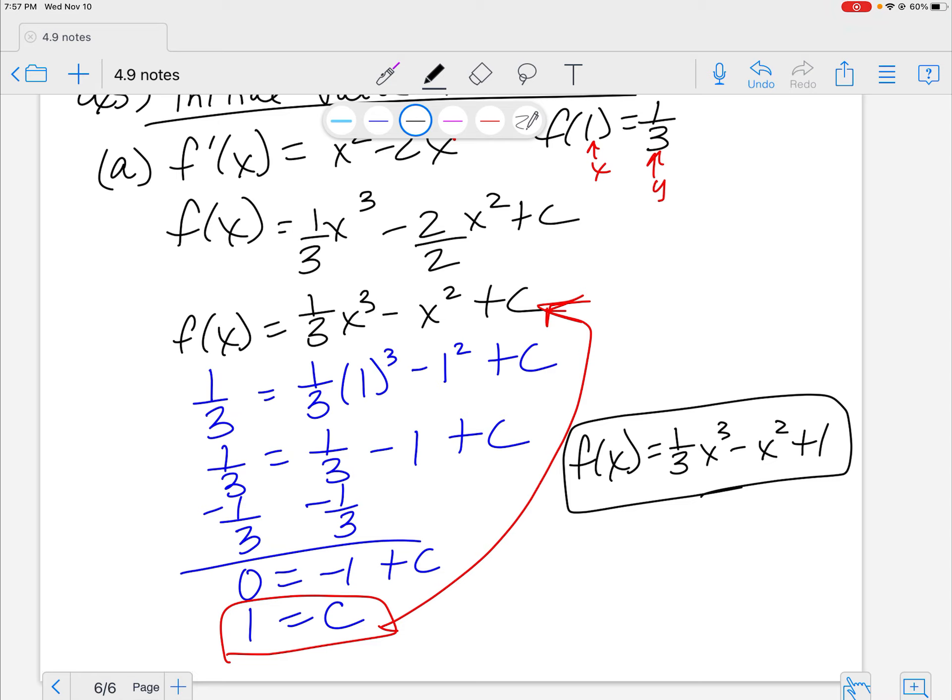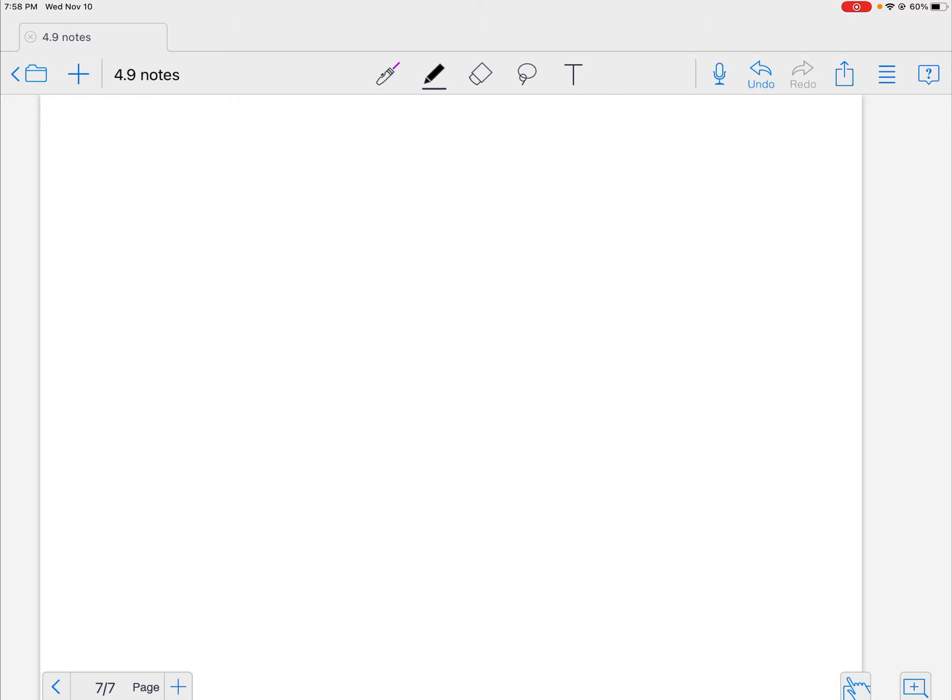Cool right? Yeah, initial value. So the moral of the story is you're going to do your anti-derivative just like normal, but then you have to be given a point so that you can figure out what the C is. If you're not given a point, then it's just a plus C situation. Okay, let's do one more just so we can practice this and see what's going on.